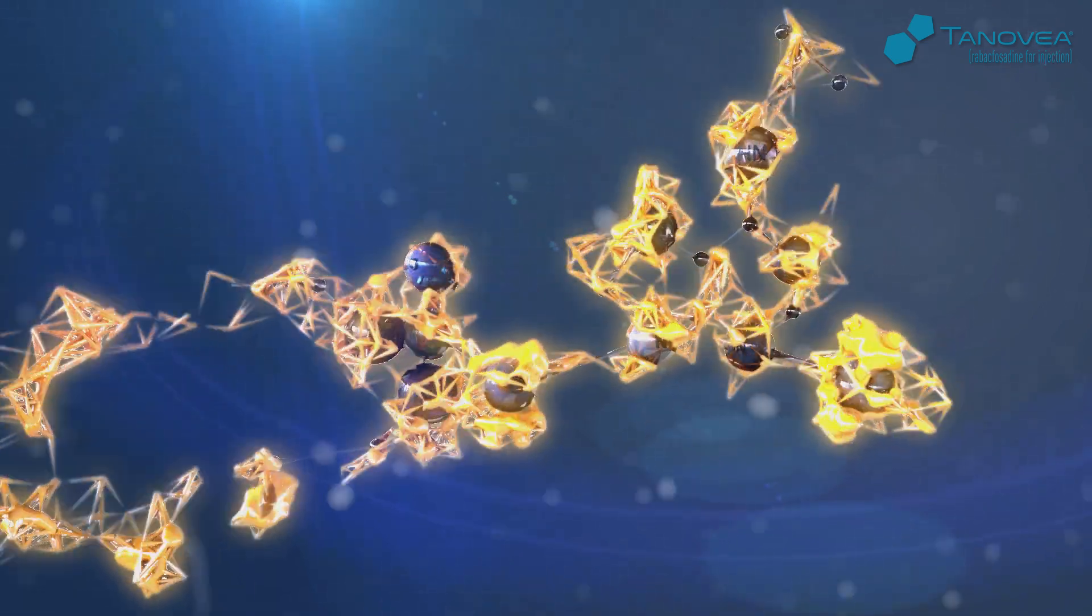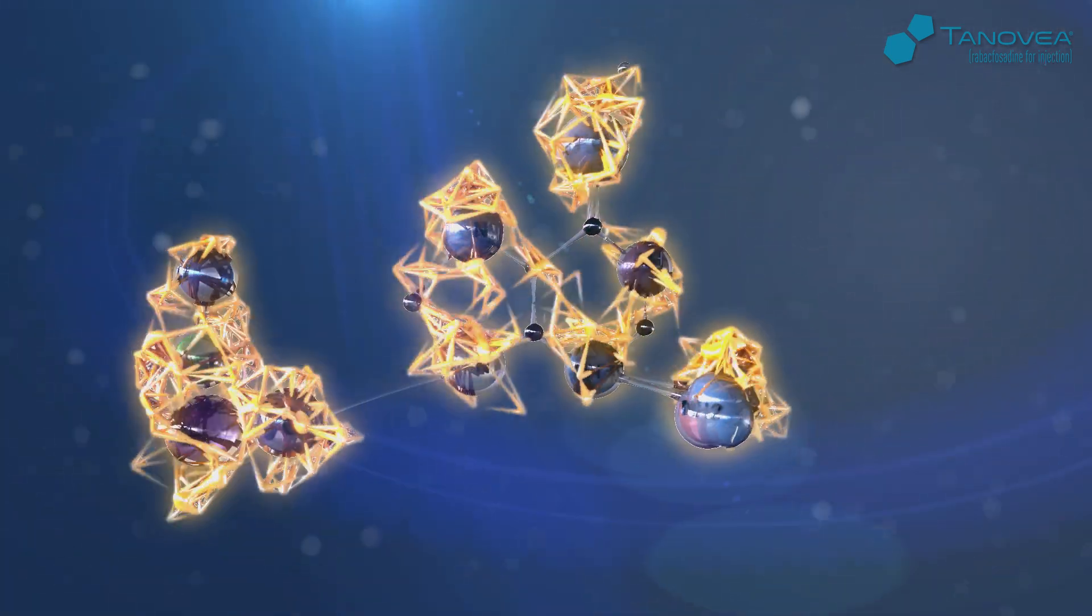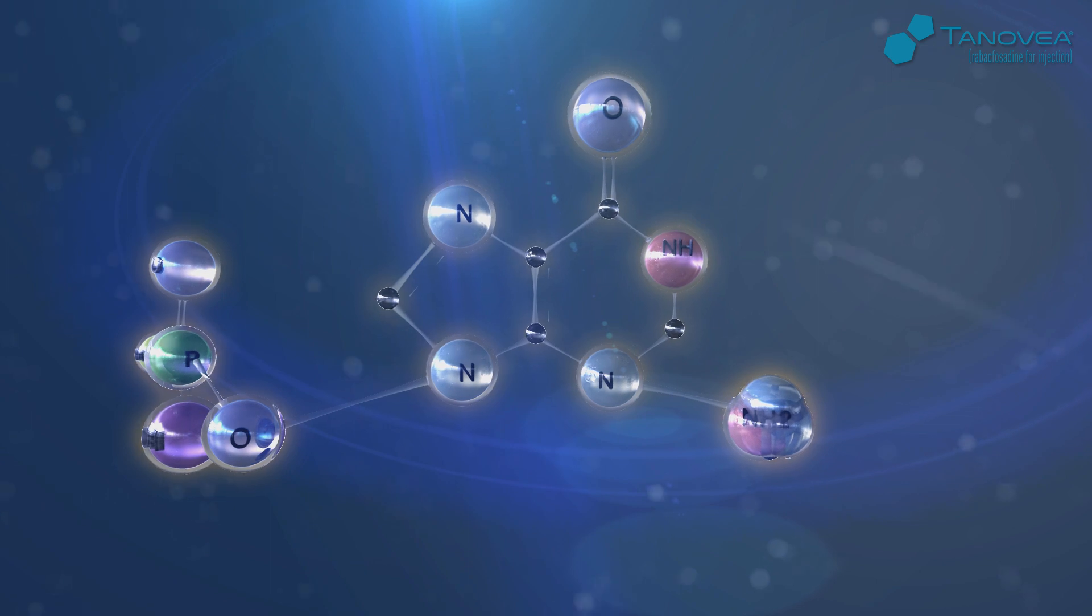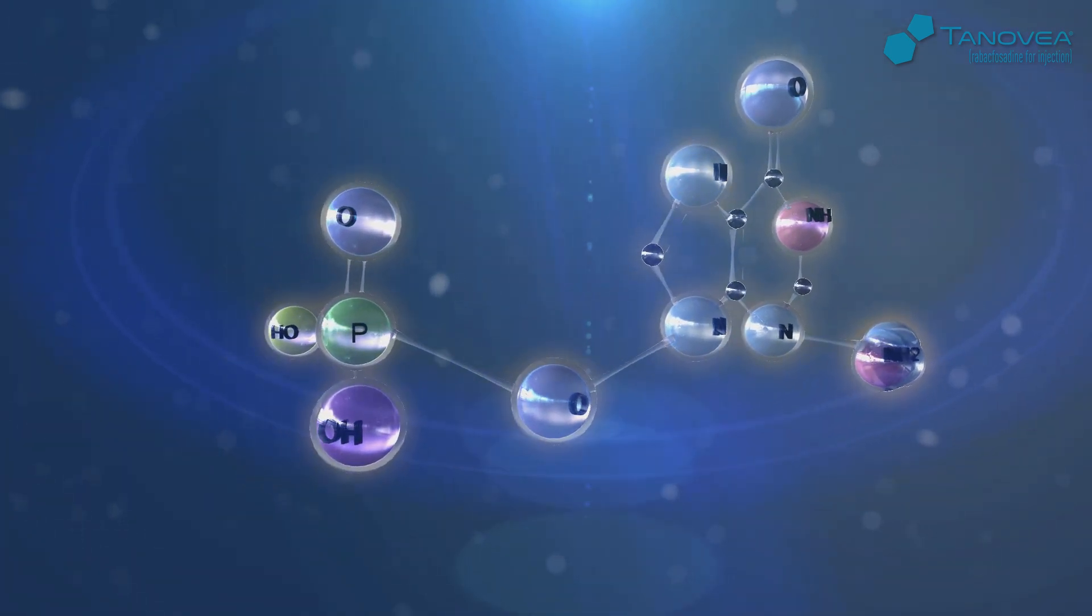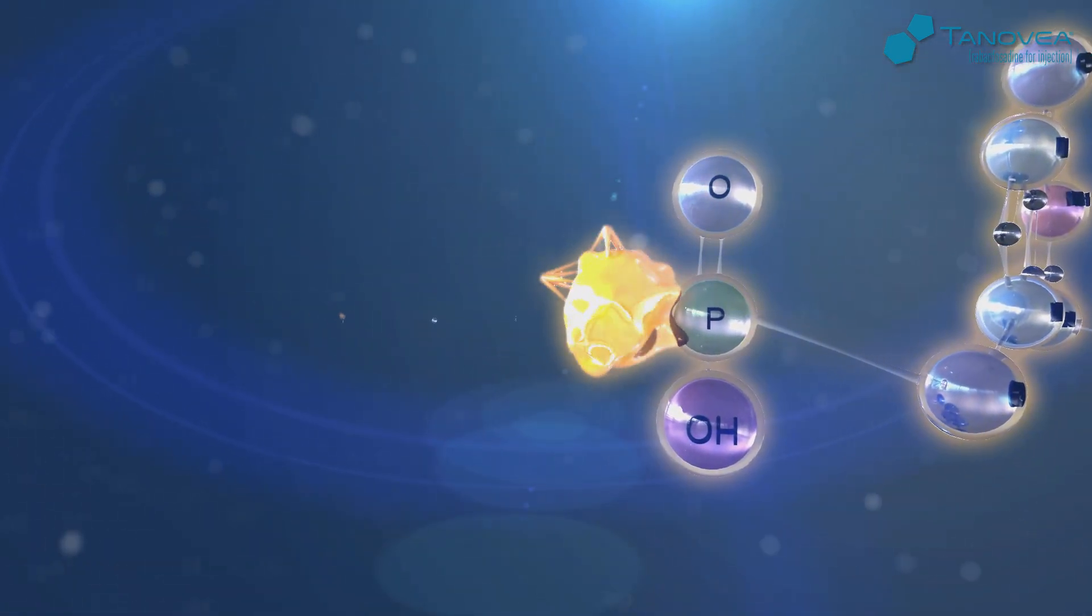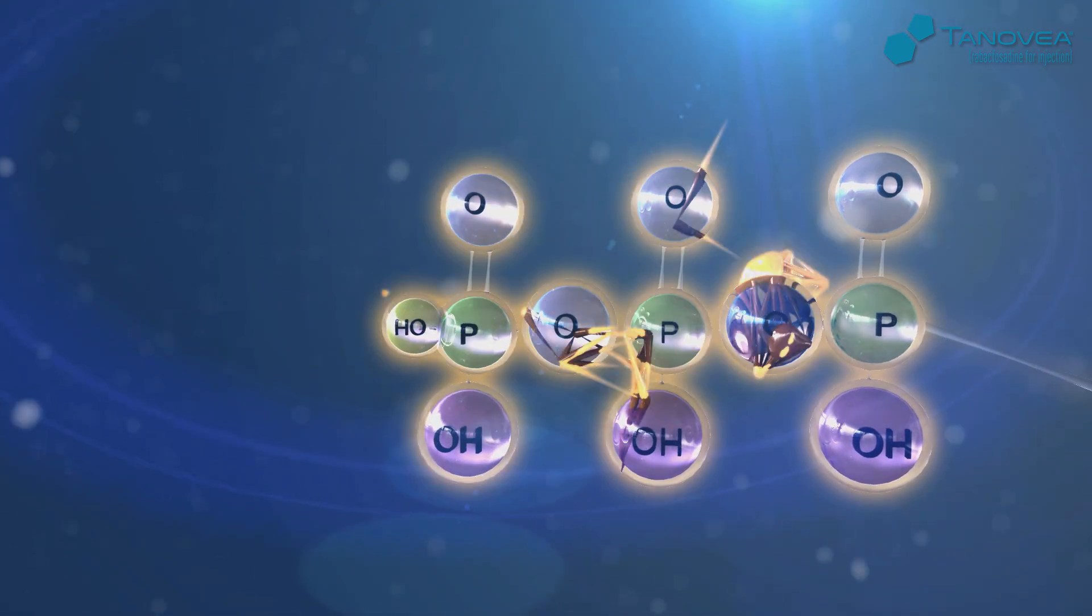Once inside a rapidly dividing lymphocyte, Tanovia is converted to its active form PMEG through a series of two reactions: first hydrolysis and second deamination.